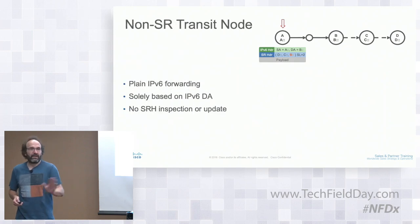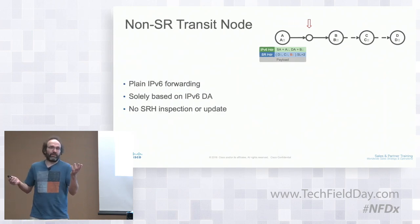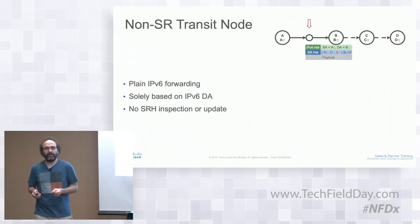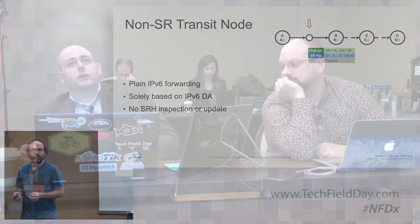Those intermediate routers are not SRV6-aware in general. They just do IPv6 routing—looking up B:: in their forwarding table and sending toward router B along the shortest path, without ever looking at the SRH.